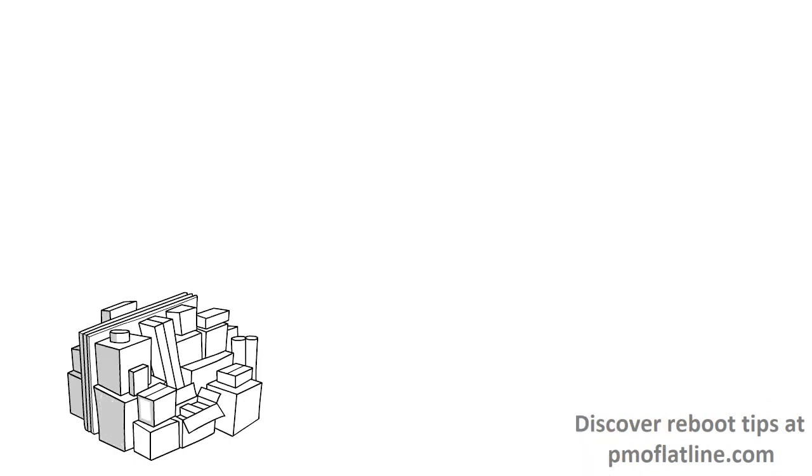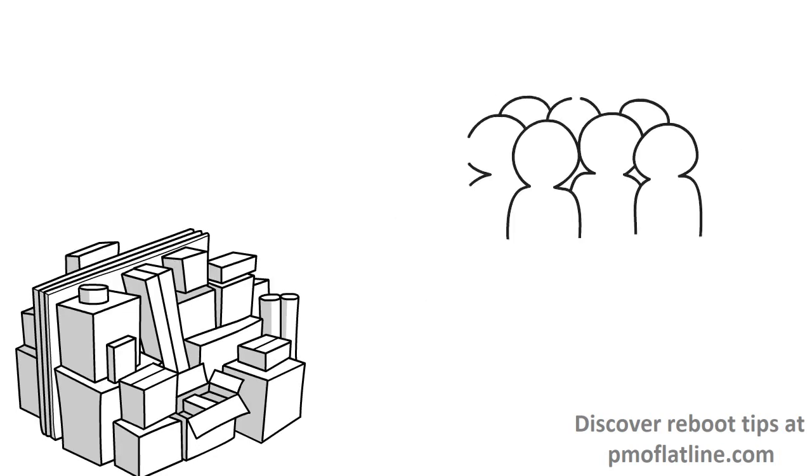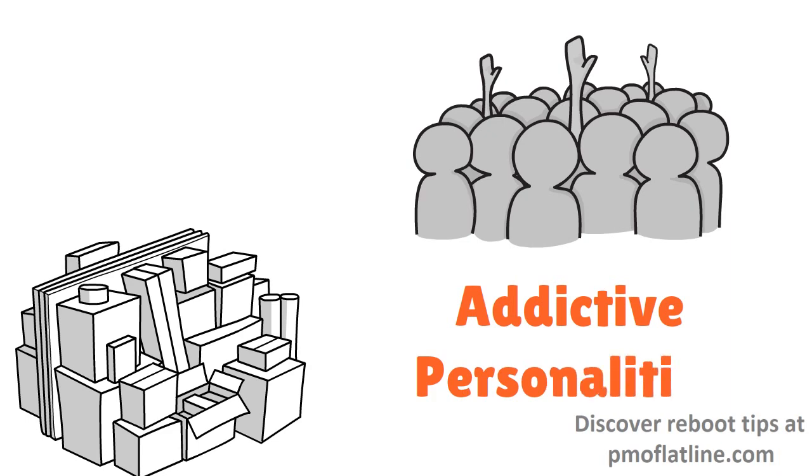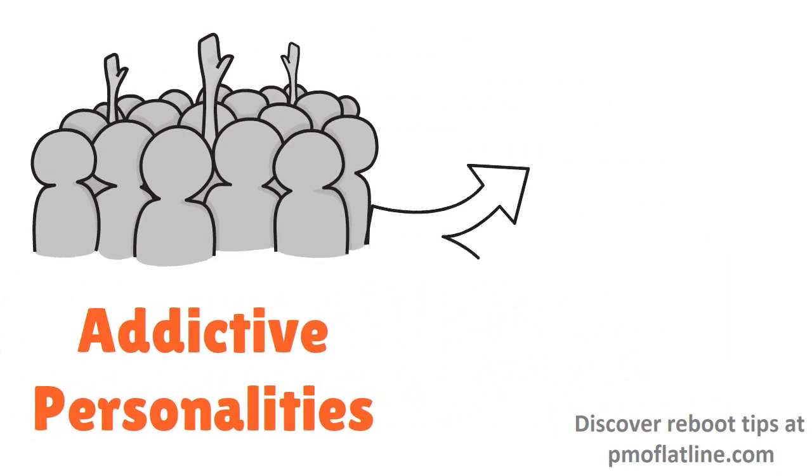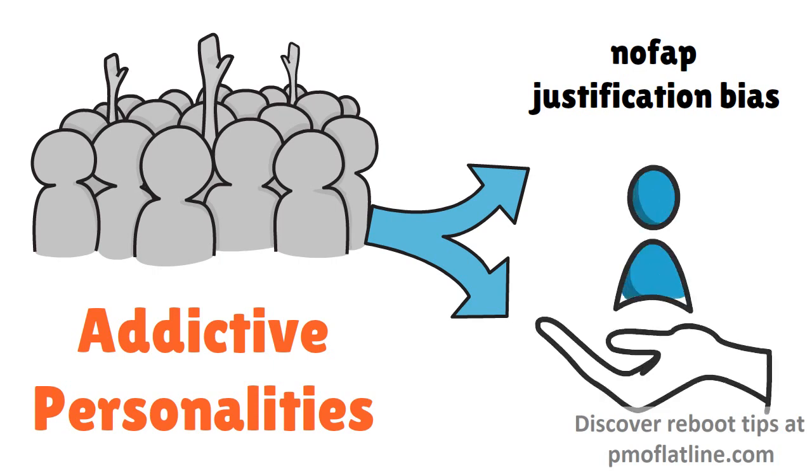As I said, this tends to happen on small scale levels as well as on big scale levels. And it seems to happen more to people who have an addictive personality type, because they are already at risk of developing several addictions. And then when the nofap justification bias sets in and they start justifying, it's pretty easy for them to start trading one addiction for another.